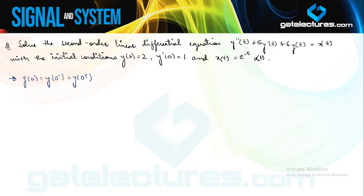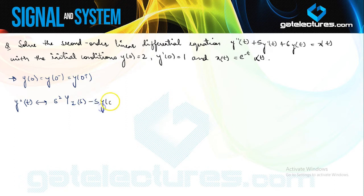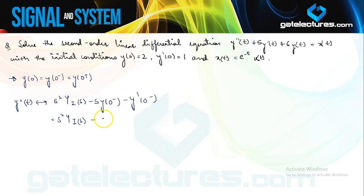If you try to find the Laplace transform for y double dash of t, it is going to be s² Y(s) minus s·y(0−) minus y'(0−). Putting in the values, it becomes s² Y(s) minus s minus 1, which gives 2s minus 1.